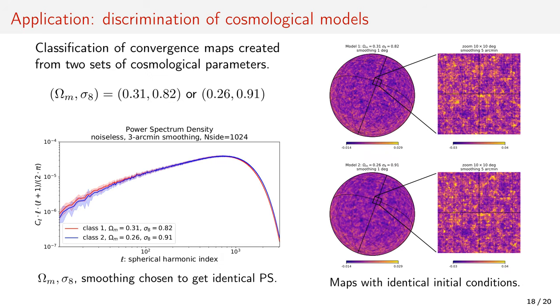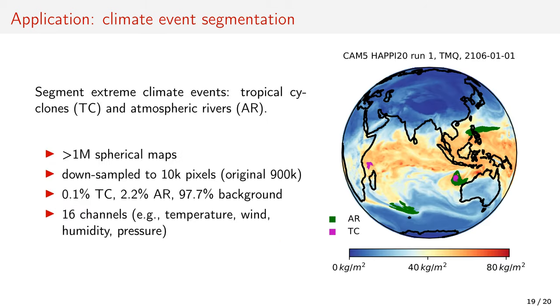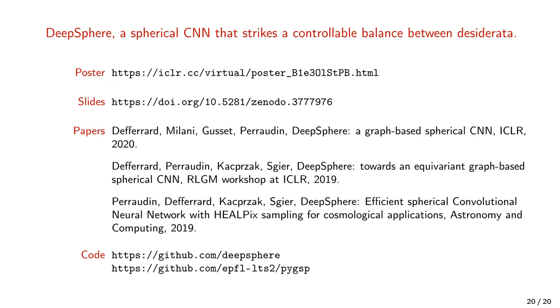If you want to see how this can be used to constrain cosmological parameters based on observations of the universe, or how we can inform policy makers by detecting extreme events in climate simulations, please look at the paper. Thanks for your attention and I am happy to take questions.